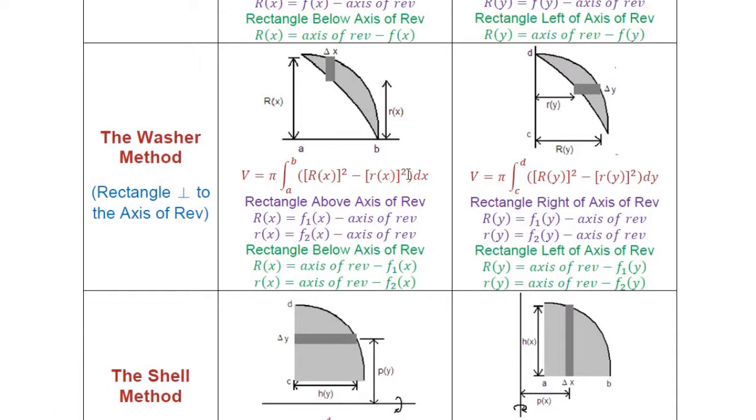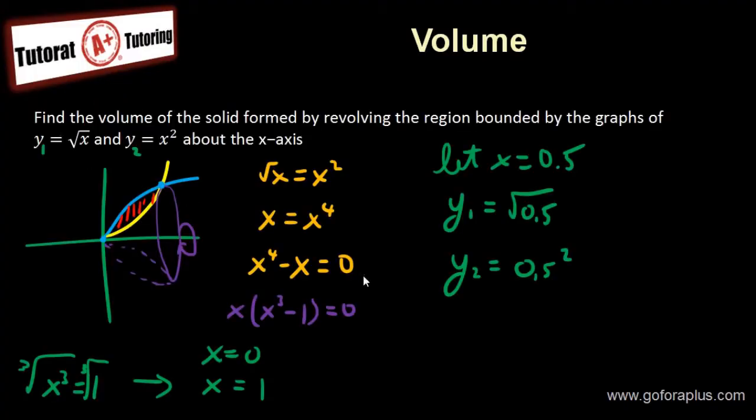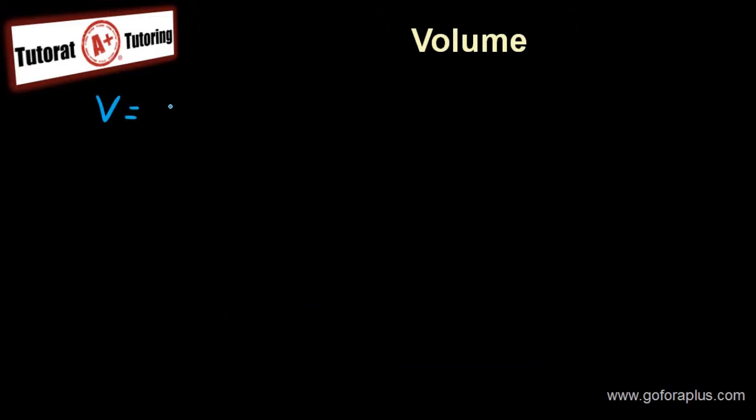Now, what is r of x and small r of x? If you come back here, I can actually put down big r is basically the top function. So square root of x, small r is the bottom function, x squared. So if you apply into the function pi from a to b, the big radius square minus the small radius square, this whole thing, dx.